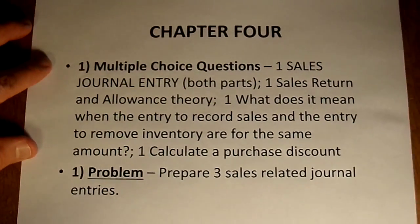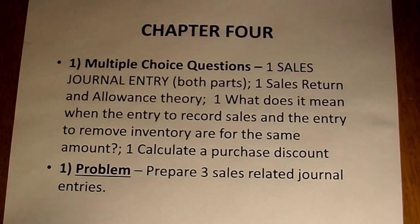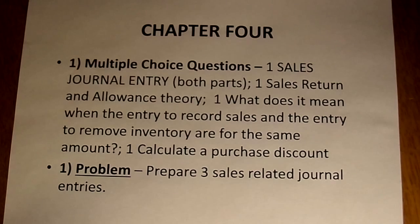For Chapter 4, one question will look for a sales journal entry. Remember, one sales transaction causes two journal entries — beware the answer that only has one. One question will deal with sales returns and allowances. A sales return where merchandise comes back causes two journal entries: one to reverse the sale and reverse accounts receivable, and a second to bring the merchandise back in with a debit to merchandise inventory and a credit to cost of goods sold.